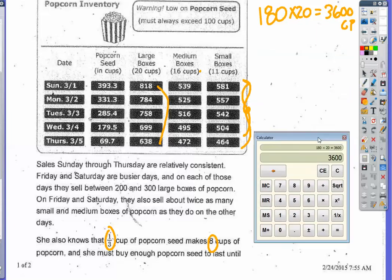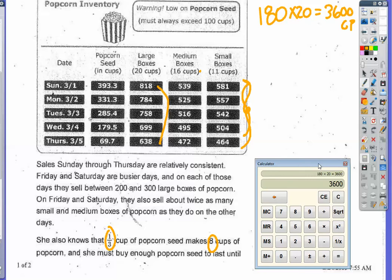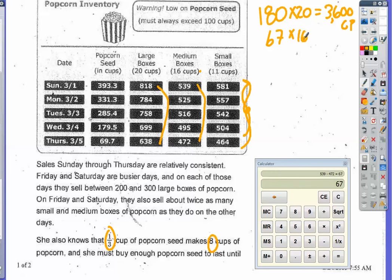For medium boxes: I started with 539 and ended with 472, so I sold 67 boxes over those five days. 67 boxes times 16 cups each equals 1,072 cups of popcorn from medium boxes during the weekday period.